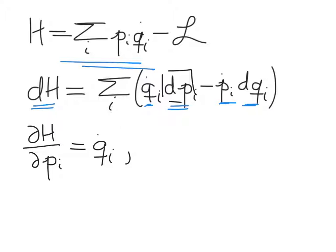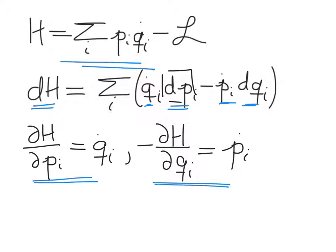And likewise, you'll get a very similar expression for p_i dot, except it's a minus sign. The book goes at these dynamical equations in a slightly different way, but it's totally equivalent. And so these are the key dynamical equations for Hamiltonian mechanics.